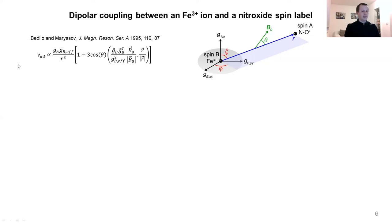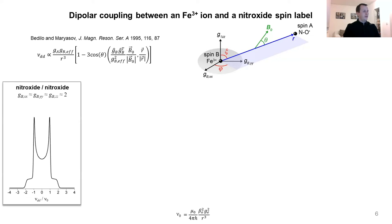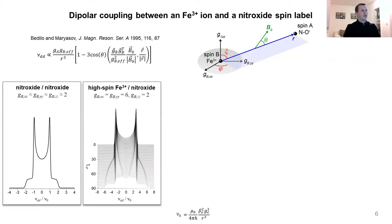Now we have our theoretical prediction and we can do some simulations. First, we simulated the spectrum of the nitroxide-nitroxide spin pair. Since both spin centers are almost isotropic, we get the typical Pake doublet for the dipolar spectrum. However, when one of the nitroxides is replaced by high-spin iron with an axial g-tensor, we get quite significantly different spectra. Importantly, they can be up to three times broader than the usual Pake pattern, and also they have either three or one singularity depending on the value of this angle ξ, whereas the Pake doublet has only two singularities.